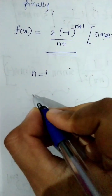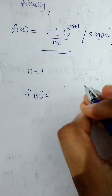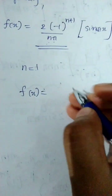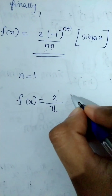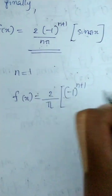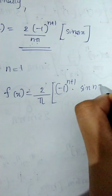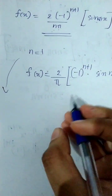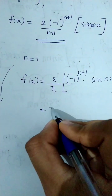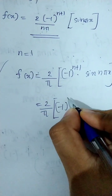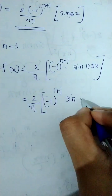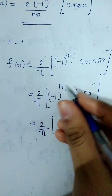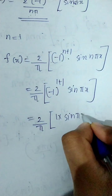That is our equation for f of x. Since 2 by π is constant, we factor it outside. We have 2 by π times the sum of minus 1 raised to n plus 1 over n, times sin(nπx). Let us write out the terms: for n equal to 1, we get minus 1 raised to 2, which is 1, times sin(πx), so the first term is 2 by π times sin(πx).